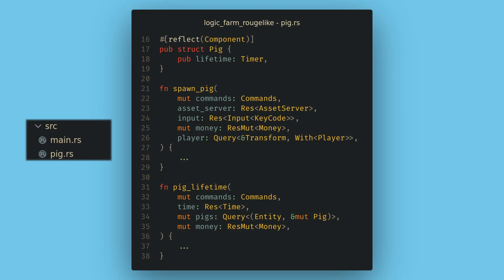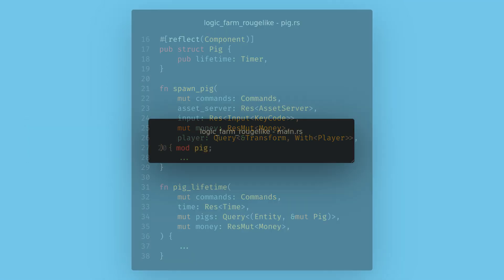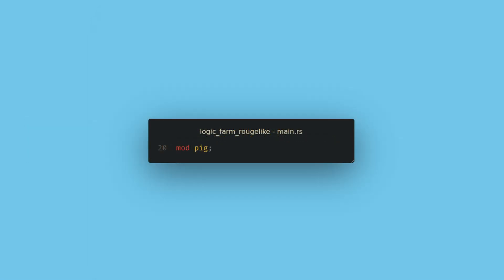So first up, let's break our project out into more than one file. I'm going to move all of the code and systems related to our pigs over to a new file called pigs.rs. To tell Rust about this new file, we're going to add mod pig to the top of main.rs.